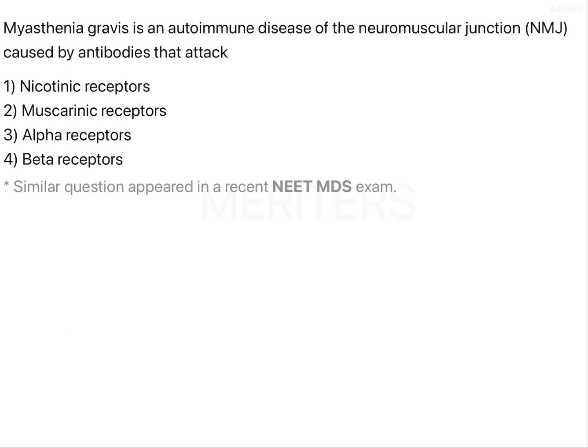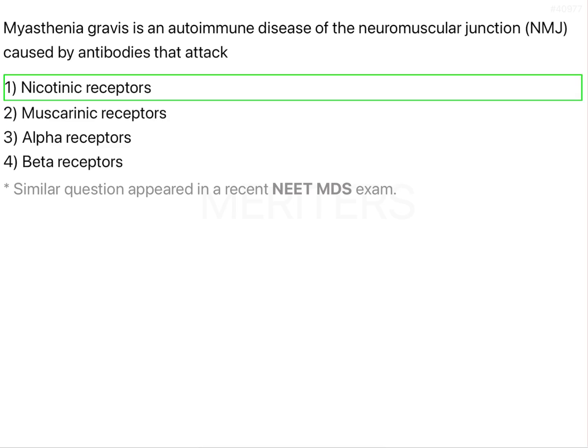In this question, they have asked us which receptors myasthenia gravis attacks. The answer to this question is nicotinic receptors. Nicotinic receptors are present at the neuromuscular junctions of skeletal muscles.